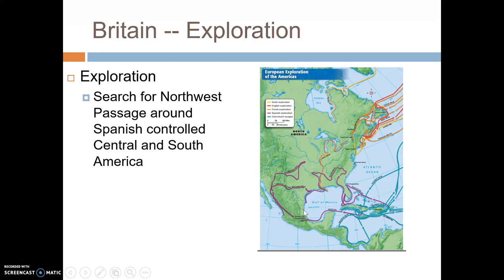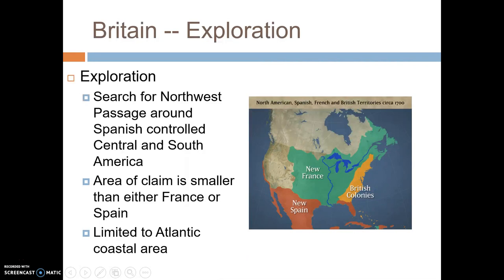The French, the Spanish, and the Dutch were really looking not necessarily for land in North America, but for a way around it — what's called a Northwest Passage to get to places like China and India. Because the Spanish controlled the south, others looked north to find a route through North America. The French took a more northern route, with the British and Dutch focusing on the east coast. Because of this, the area claimed by the British is going to be much smaller than either France or Spain, really limited to the Atlantic coastal area.